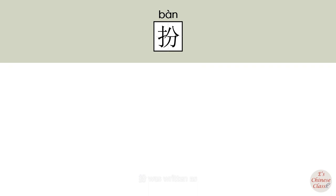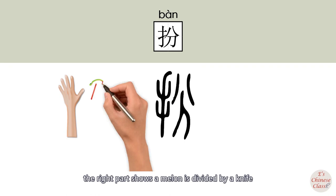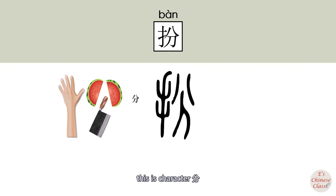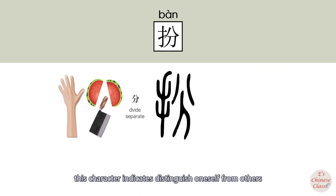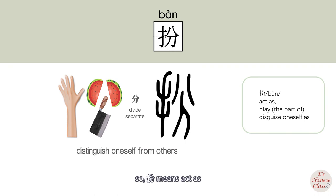In ancient times, 扮 was written differently. The left part is a hand; the right part shows a melon divided by a knife — this is the character 分, which means 'divide' or 'separate.' This character indicates distinguishing oneself from others, so 扮 means 'act as.'